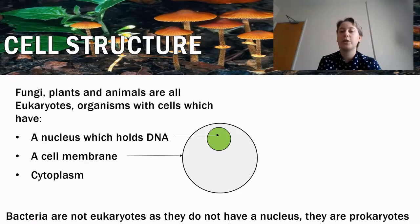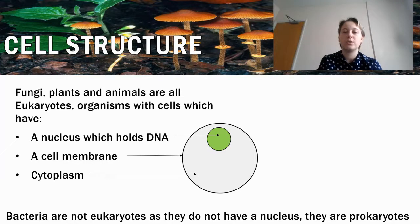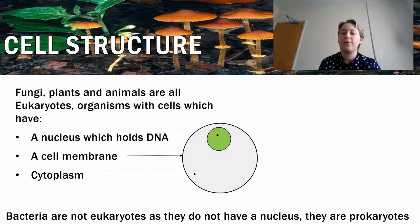We then have a cell membrane which holds all the cell together — it's that outer shell which holds all of the cell parts inside. We also have a cytoplasm, which is a gel liquid that holds everything inside the cell. Bacteria are not part of this group of eukaryotes; they are in their own group called prokaryotes because they don't have a nucleus with DNA in it. Their DNA is just in the cytoplasm.